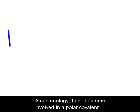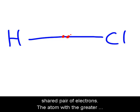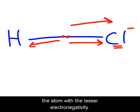As an analogy, think of atoms involved in a polar covalent bond as being in a tug-of-war, with the rope being the shared pair of electrons. The atom with the greater electronegativity will pull harder on the electrons than the atom with the lesser electronegativity.